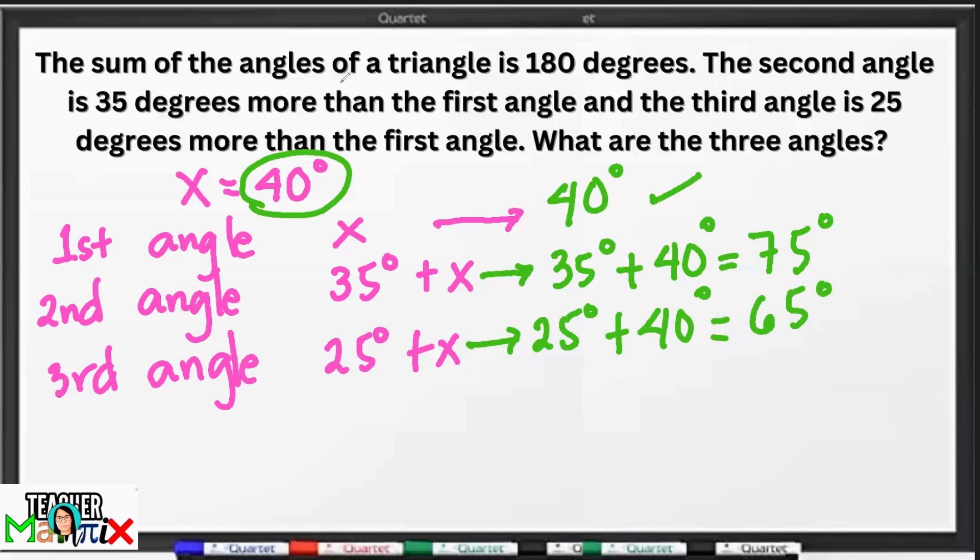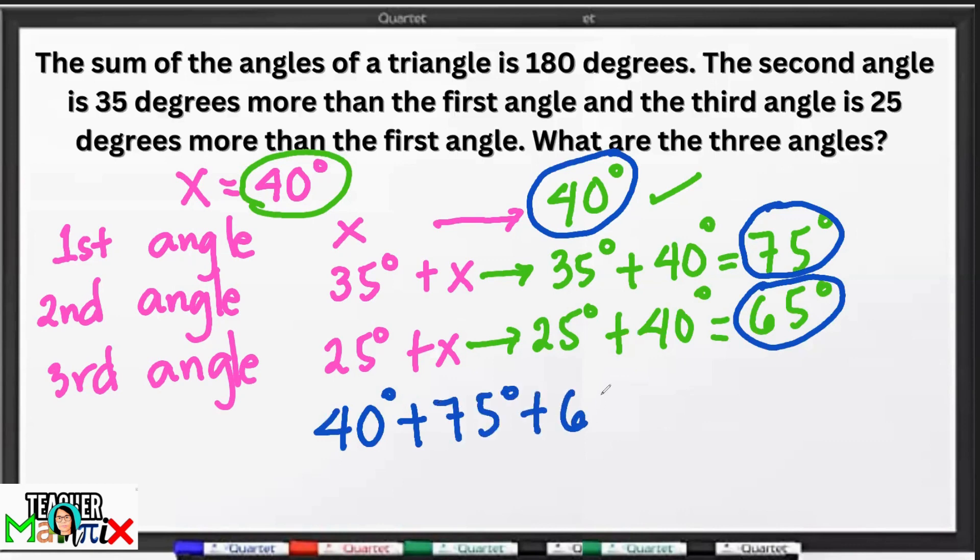Now, ang tanong, tignan natin kung may equality. Pag-add natin yung lahat kung 180 ba yung sum nila. So, let's have the first angle which is 40 degrees plus 75 degrees plus 65 degrees. 180 yung kanina. So, 40 plus 75, 115, 115 plus 65, we have 180 degrees equals to itself which is 180 degrees.